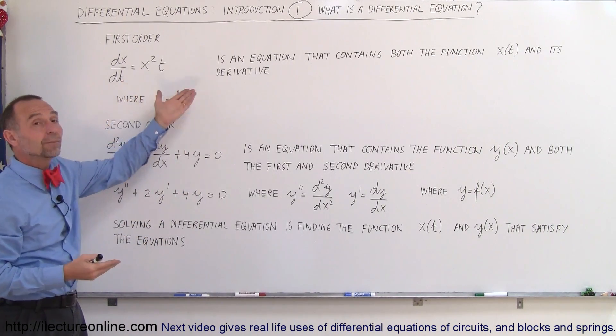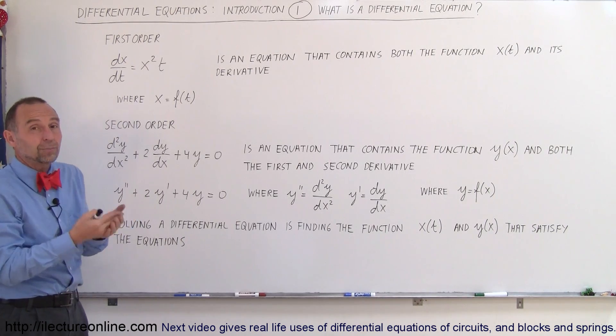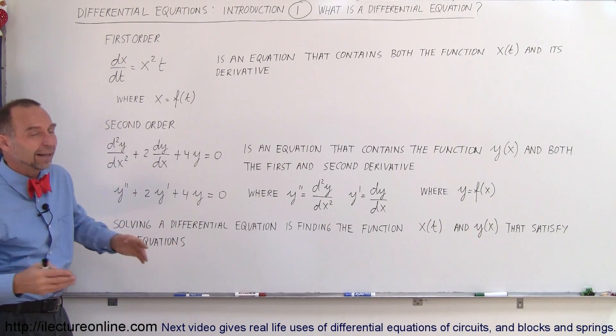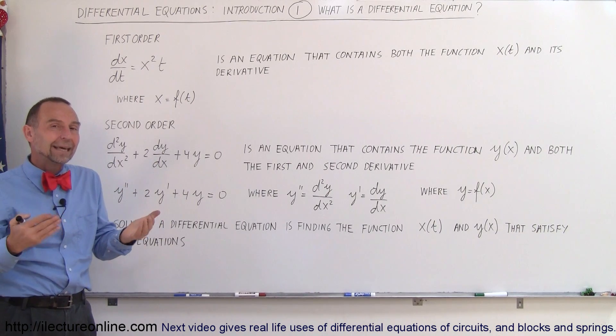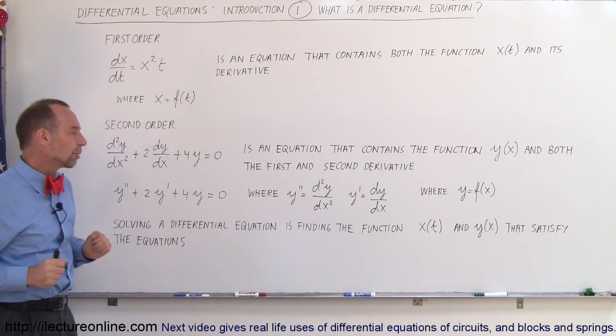For example x could be 3t squared minus 4 or 3t squared plus t minus 5 or something like that. Not saying that's the case here but it could be anything and so finding that is a little bit more tricky.